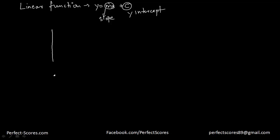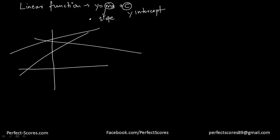So linear functions look like something like this — there's always a straight line. And as I said, linear functions have two properties: its slope and its y-intercept.